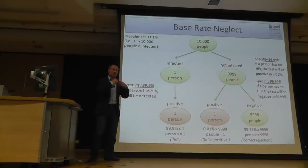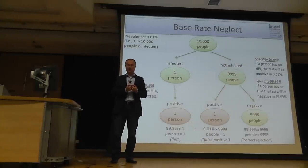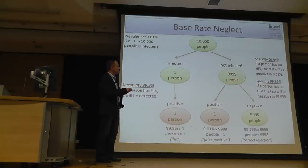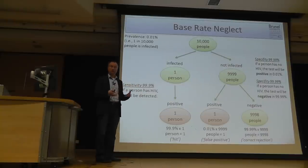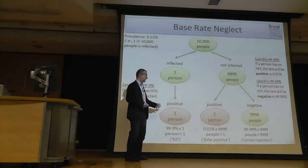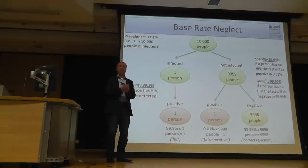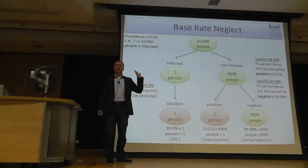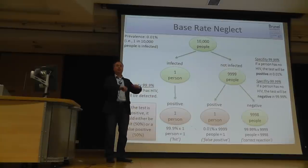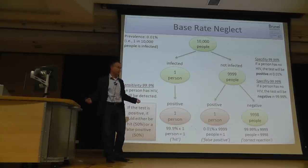The problem is: when we have a positive test result, we do not know whether it is due to a truly infected person or a false positive. With these numbers — which are actually rather accurate regarding the true prevalence of AIDS and test performance — we have an equal likelihood that the person is truly infected or that it's a false positive from the huge non-affected group. That's the reason why it's just 50%.